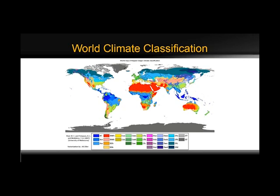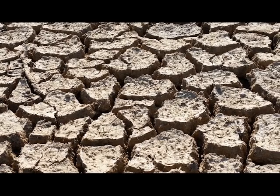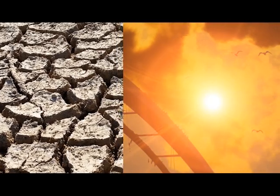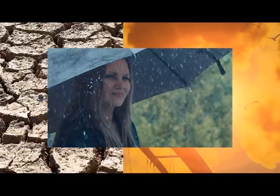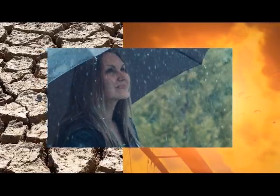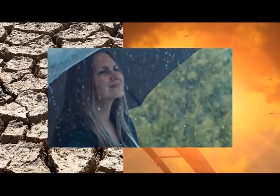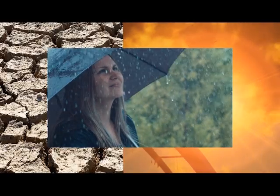World Climate Classification. Have you ever wondered why one area of the world is a desert, another a grassland, and another a rainforest? Why there are different forests and deserts, and why there are different types of life in each area?